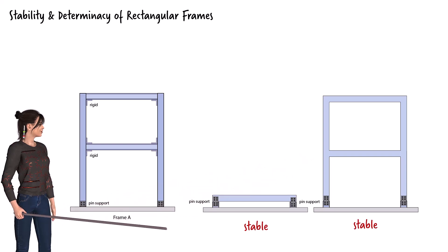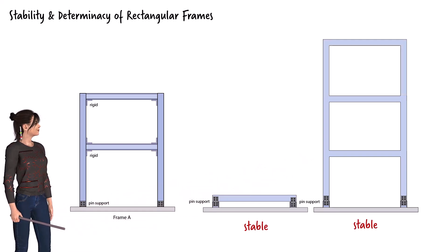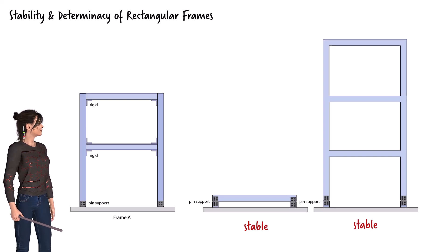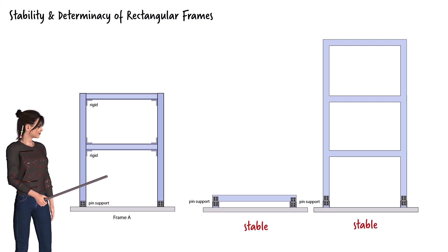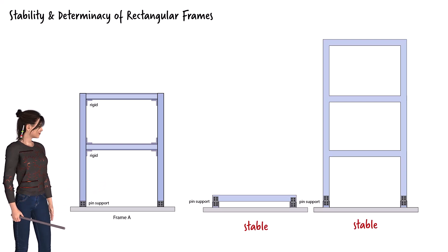In fact, no matter how many levels we add to the frame, the structure remains stable, as long as the connections are rigid. So frame A, and any variations with added stories, are stable.